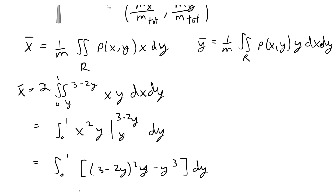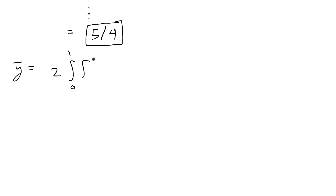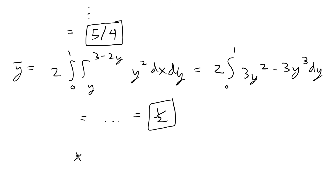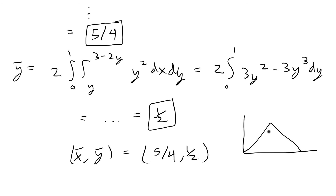For ȳ, we still have the factor of 2 and integrate y·ρ(x,y) = y² over the same region (0 to 1 and y to 3 − 2y). The inner integral gives 3y² − 3y³ dy from 0 to 1, multiplied by 2. Solving that single integral gives ȳ = 1/2. So the final answer for the center of mass is (x̄, ȳ) = (5/4, 1/2). This is the two-dimensional point on the triangle where the mass is centered and completely balanced. We're done with this problem.